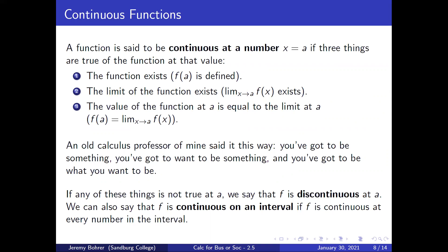If any of these things is not true at a, we say that f is discontinuous at a. We can also say that f is continuous on an interval if f is continuous at every number in the interval.